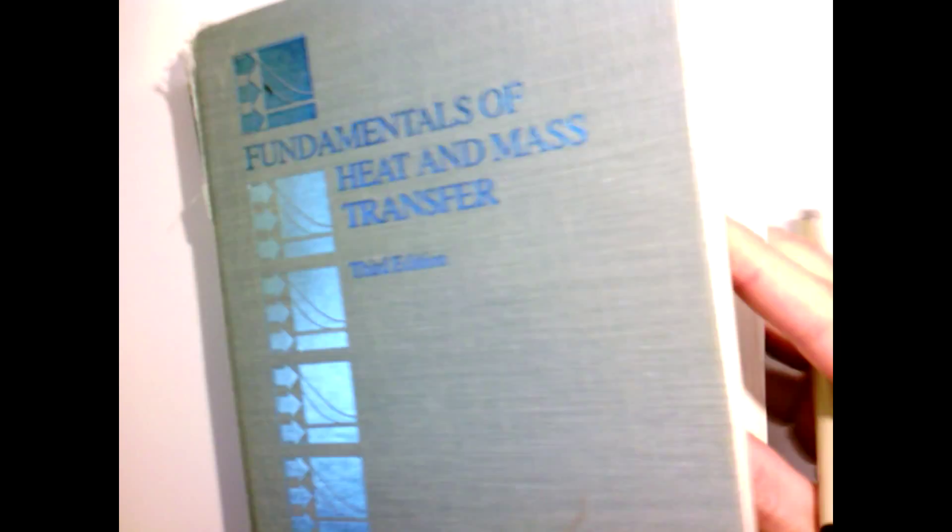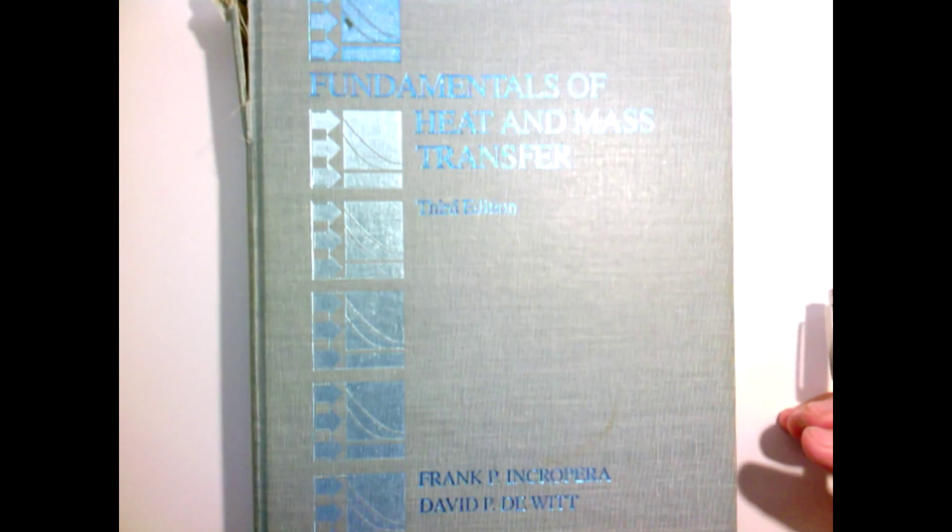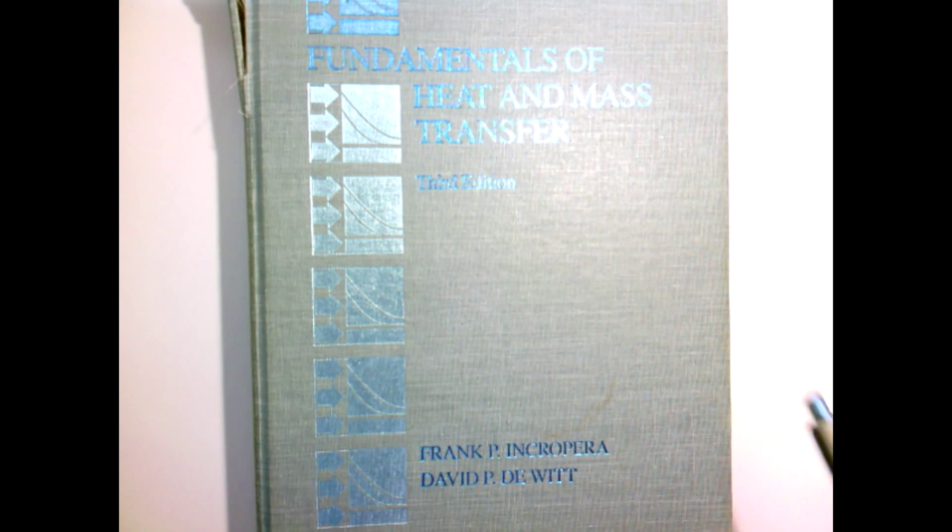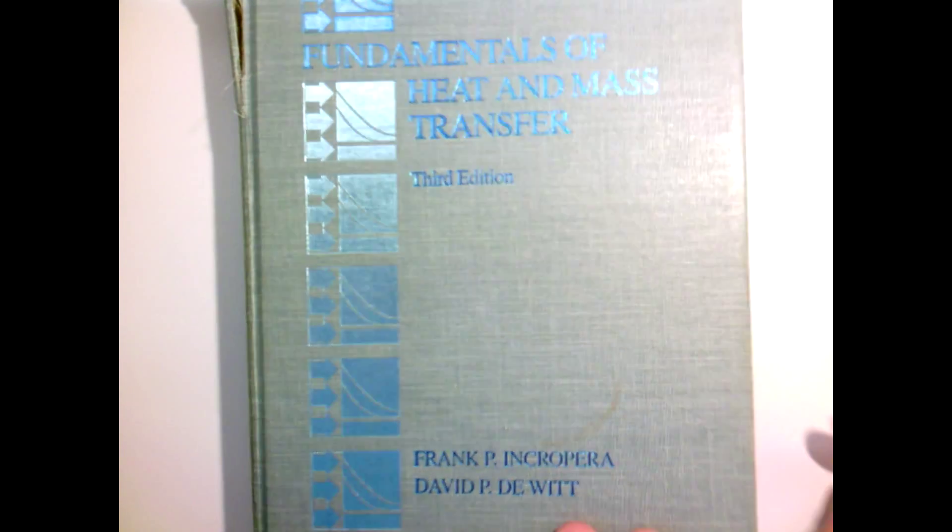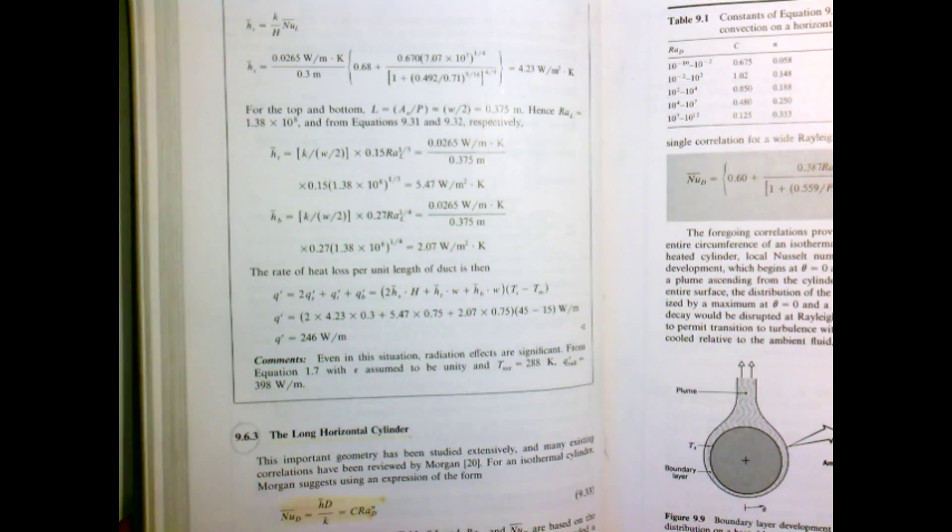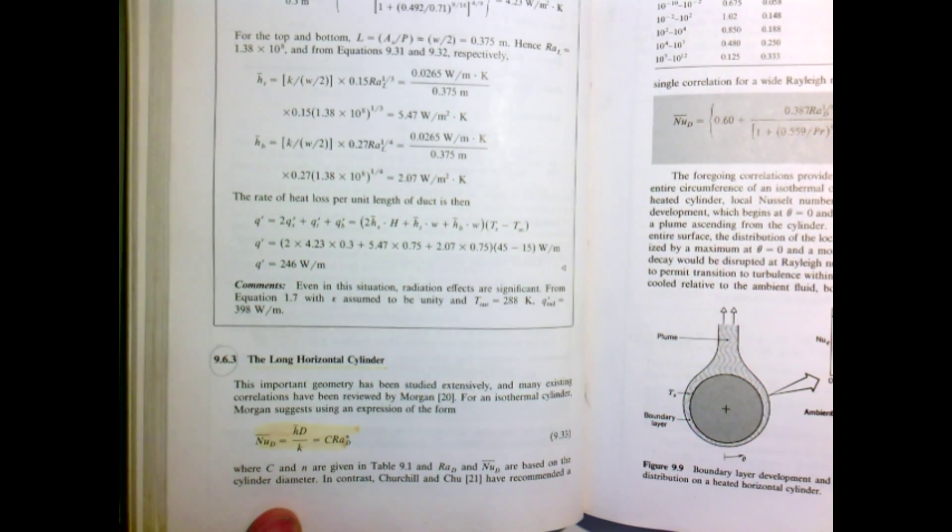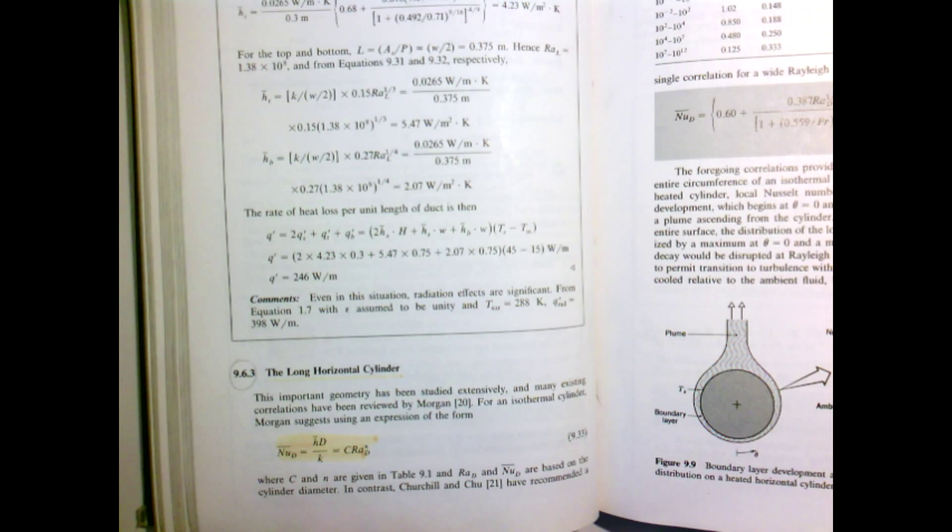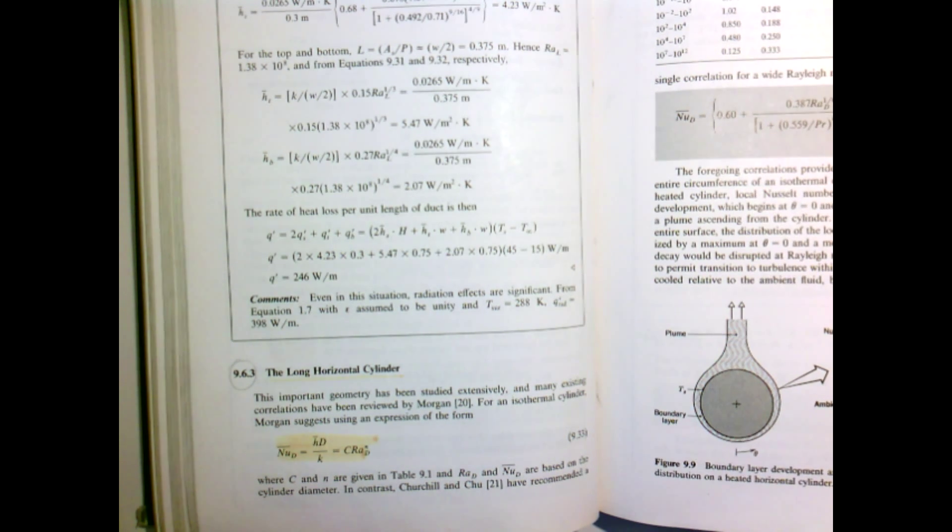If we turn to my trusty heat transfer book—the one I used when I was an undergraduate, one that we can still get copies of, only a slightly newer edition—and we look in the chapter on what they call free convection, which is the same thing as natural convection, you'll find it full of correlations.